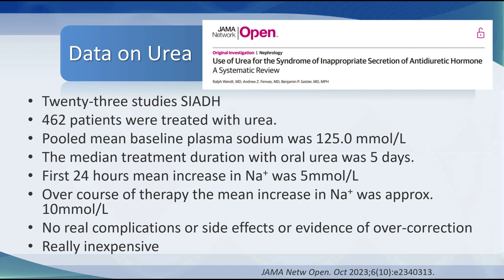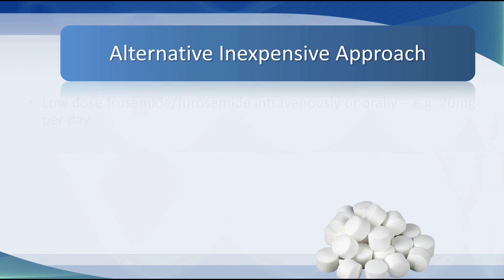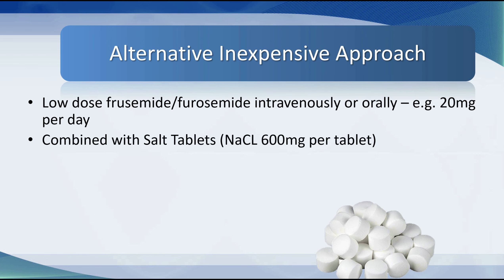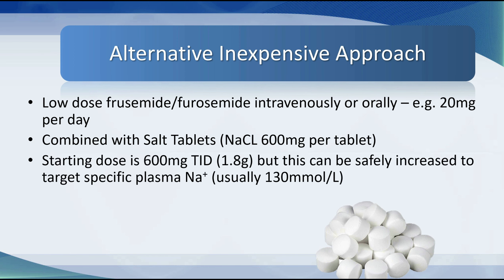The great benefit of urea is that it's really inexpensive. Alternative inexpensive therapies include low-dose furosemide — intravenously or orally at 20 milligrams per day — combined with salt tablets, for example sodium chloride 600 milligrams per tablet. The starting dose is 600 milligrams three times daily — 1.8 grams — but this can safely be increased to target specific plasma sodiums, usually 130 millimoles per liter.